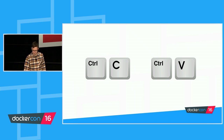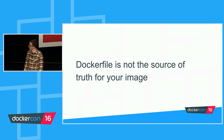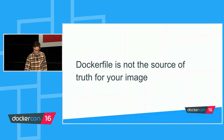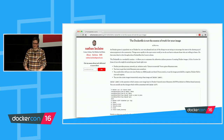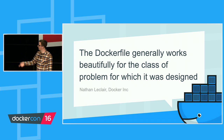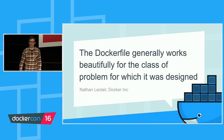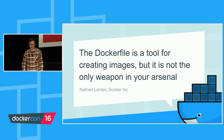As best practices evolve, you've no link, no way of keeping up, no way of tracking those changes. To quote Nathan Leclerc: Dockerfile is not the source of truth for your image. It's used to build an image at a moment in time based on the context of the machine it's on. It doesn't have the properties to hold all that state, that information about the actual resulting image. The Dockerfile generally works beautifully for the class of problems for which it was designed. I agree wholeheartedly — but I don't think all the use cases we're using it for today are in that sweet spot.